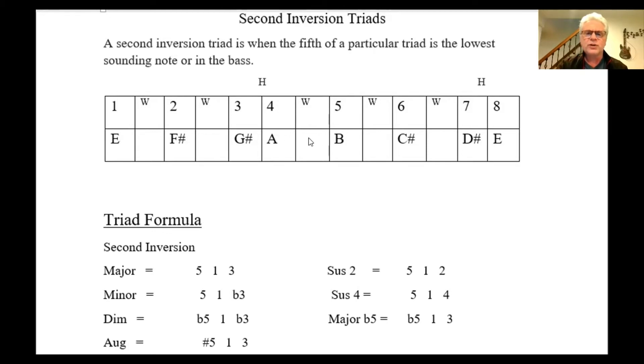Our diminished would start with a B flat, an E, and a flat three, a G. Our augmented, we'd start with the sharp five. So a sharp five would be B sharp, or enharmonically would just be a C. So we would start with C, E the one, and then our third would be G sharp.